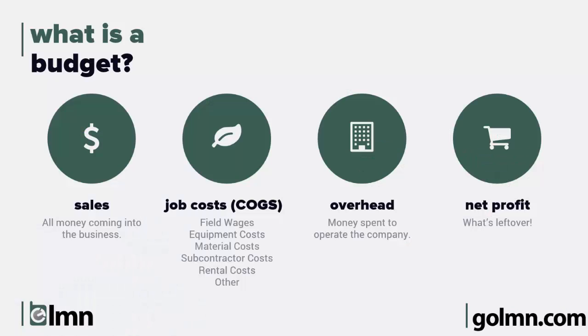We're going to start with a budget to help you make sure that every job has the right amount of overhead recovery and profit specific to your company. There are four main components of the budget. The first is sales — that's all money coming into the business. Next, you'll build your job costs: how many crews you'll need to hit your sales goal, what equipment you have, how much material you'll need, and budgets for subcontractors, equipment rental, and other miscellaneous costs.